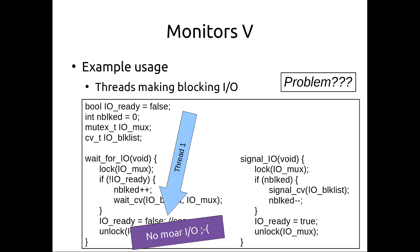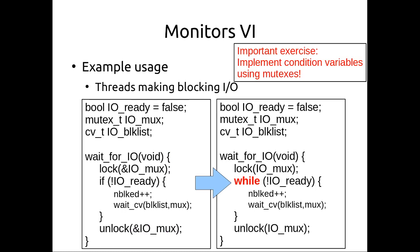The fix is simple: you have to acknowledge that when you call wait, you break the critical section. Instead of using an if to check if IO is ready before waiting, you need to use a while loop. When you wake up from the condition variable, you recheck the data structures to see if IO is actually ready — another thread might have come through and stolen it. If it's not available, you need to block again and wait.